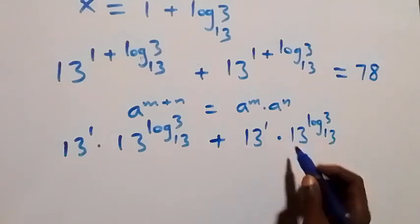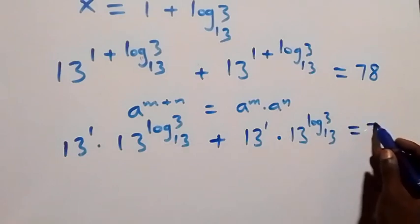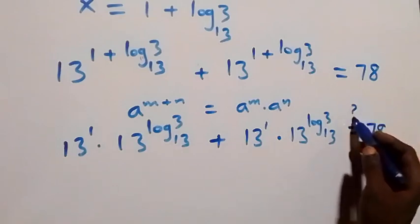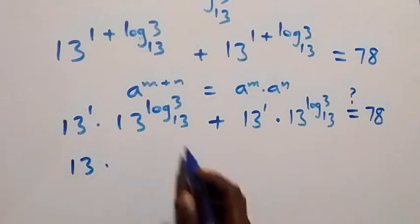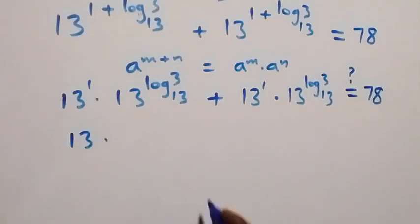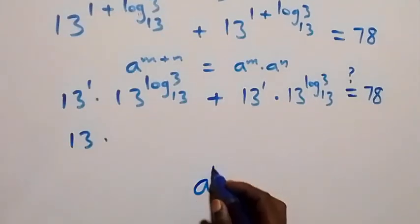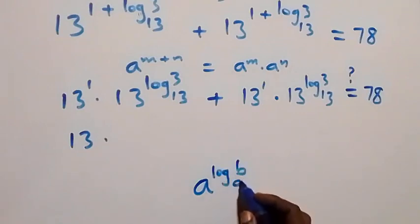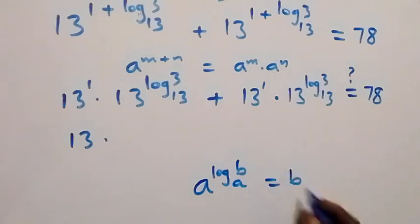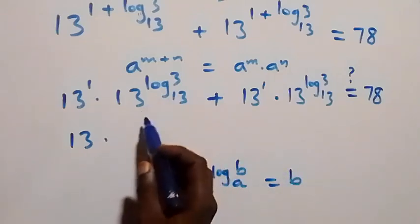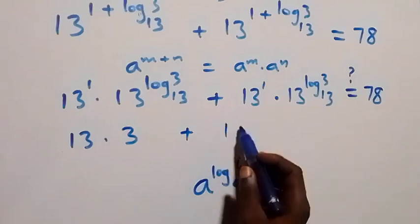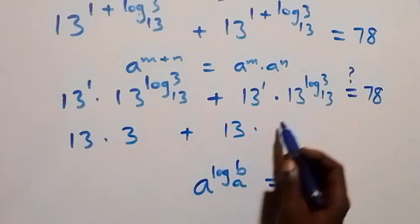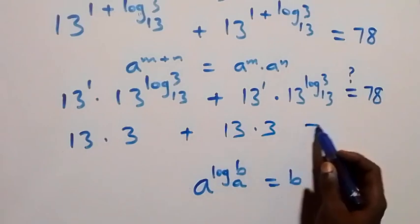When we apply the logarithm law — a raised to power (log b to base a) equals b — the term 13 raised to power (log 3 to base 13) becomes 3. So we get 13 times 3, plus 13 times 3. That is 39 plus 39, which equals 78.